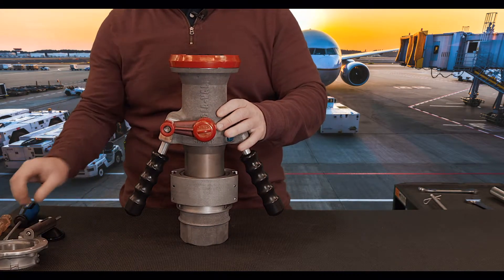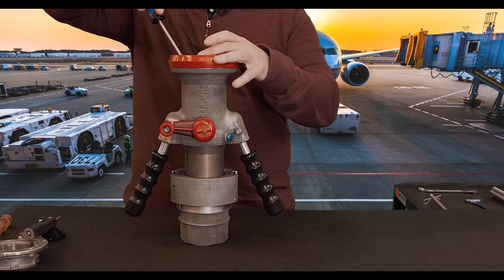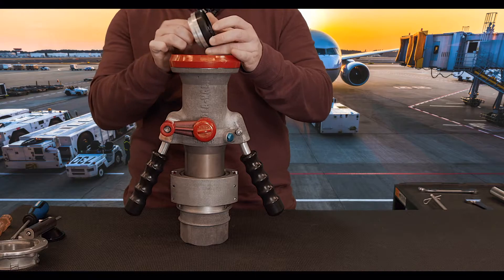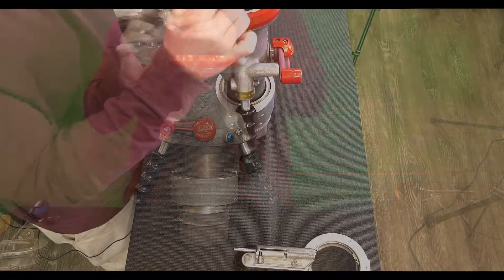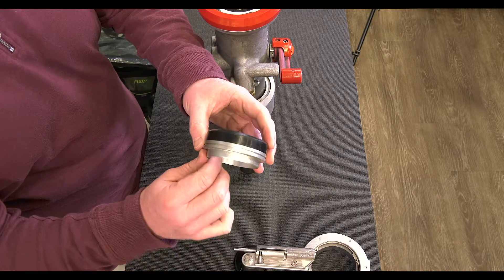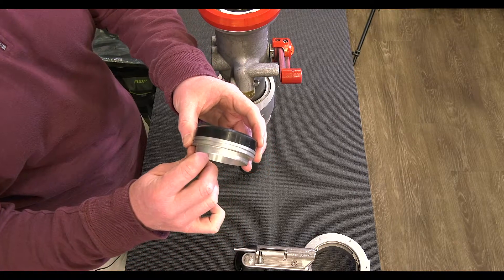Once our key is removed, we can use a screwdriver and very easily pop out the nose seal. This groove right here does not hold an o-ring, so it makes a very nice position to pry the nose seal out.